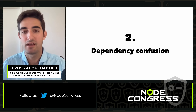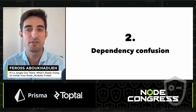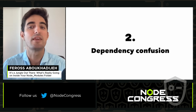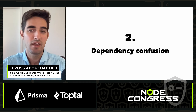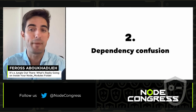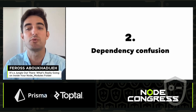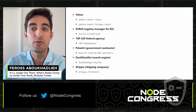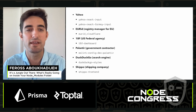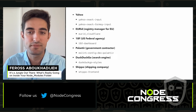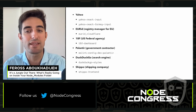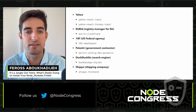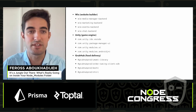The next attack vector is dependency confusion. This happens when a company publishes packages to an internal NPM registry using a name that hasn't been taken yet on the public registry. Later, an attacker registers a package with the same name publicly, confusing internal tools into accidentally installing the public version. Looking through recently deleted NPM packages, we found a bunch of likely dependency confusion attacks — most had malicious code in them, targeting various organizations including governments.